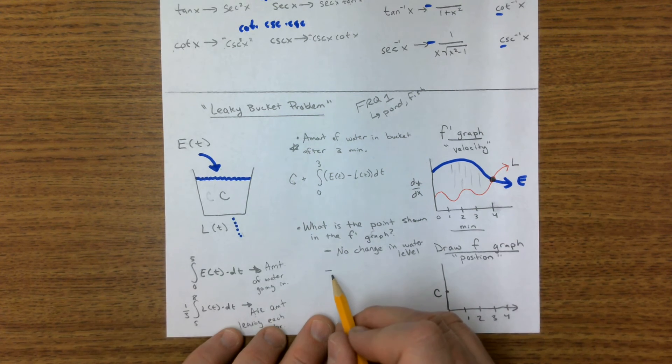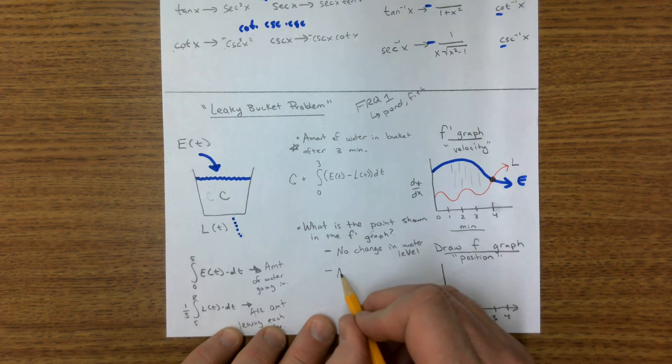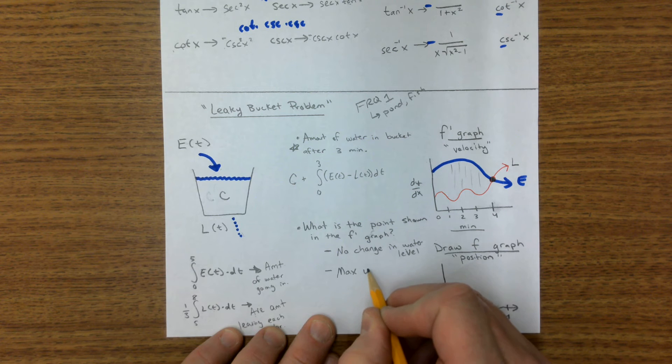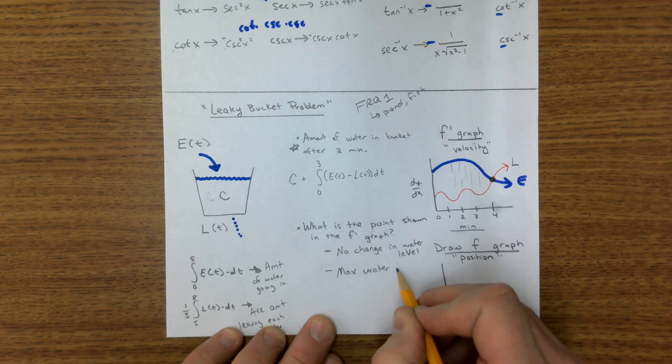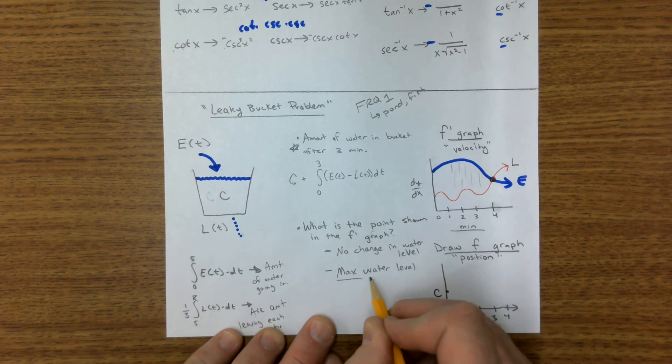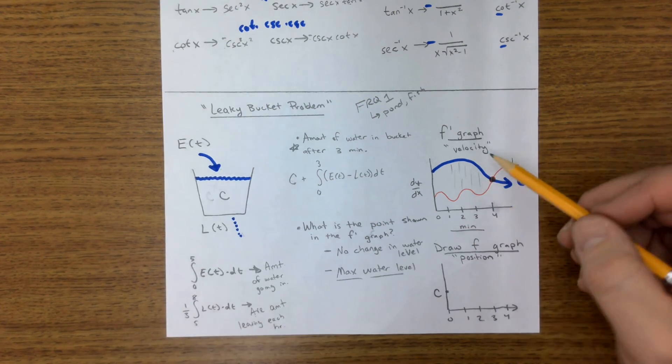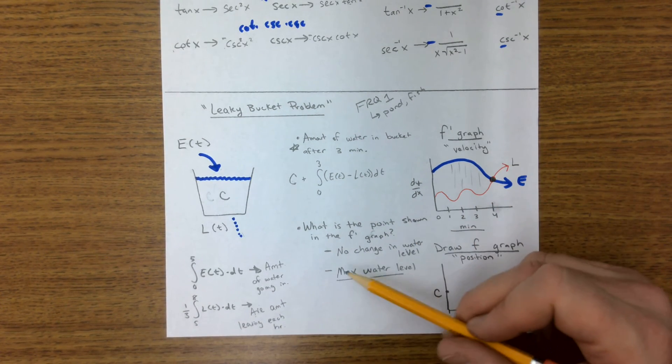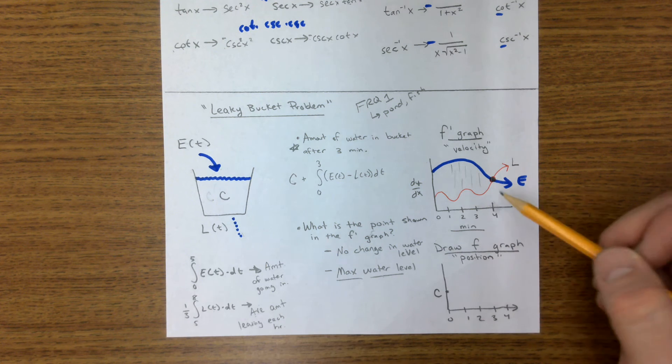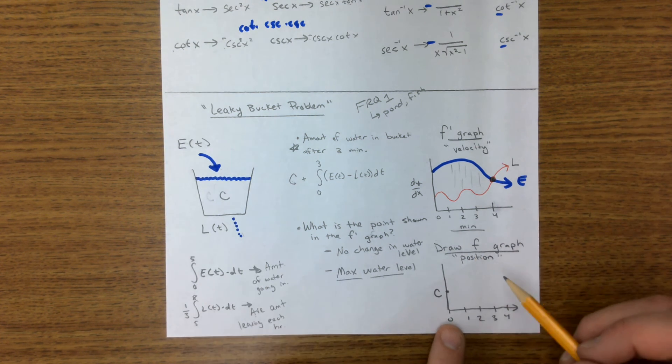But then the follow-up question is, well, what else does that mean? Well, that turns out to be the max water level. And it may not look like a maximum right here, because it definitely doesn't look like a maximum. It looks like an intersection. But that's the maximum water level. I can probably show it to you best with this position graph down here.